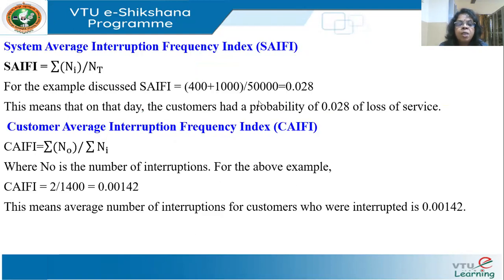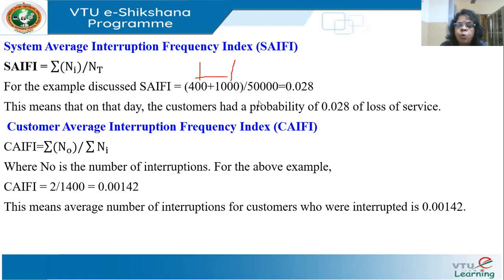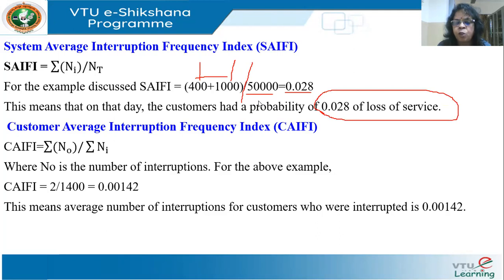Then we have SAIFI — System Average Interruption Frequency Index — which measures how frequently a customer is affected. It is given by sigma NI divided by NT. The first interruption affected 400, the second affected 1,000, so the sum of the two as a ratio of the total 50,000 is 0.028. This means on one day the customers had a probability of 0.028 of loss of service — a 2.8% probability that a customer will have an interruption.